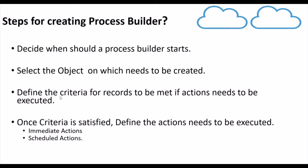Next, you need to define criteria for records to be met if actions need to be executed. You need to specify the criteria, and only if those criteria are satisfied by the record will the actions be executed. Once the criteria is satisfied, you need to define the actions. Actions are of two types: immediate actions and scheduled actions.